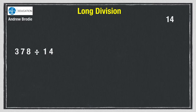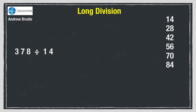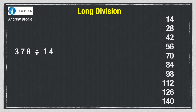1×14 is 14. Add 14 to that to get 28. Add another 14 to get 42. Add 14 to get 56. Add 14 to get 70. Another 14 makes 84. Another gets us to 98. 98 add 14 is 112. 112 add 14 is 126. And 126 plus 14 is 140. It's good to get as far as this because 10 14s are 140. If we hadn't ended up with 140, we would know that we'd made a mistake somewhere in our additions.